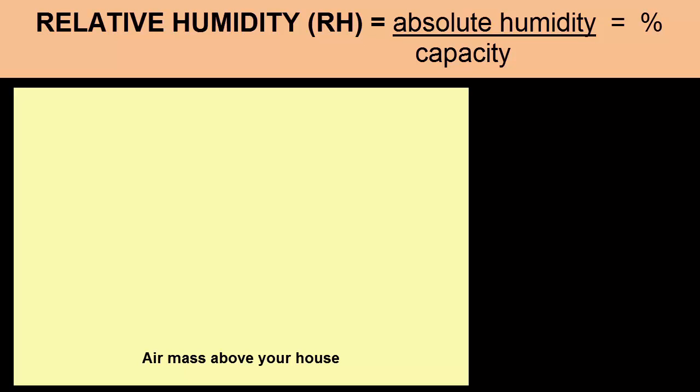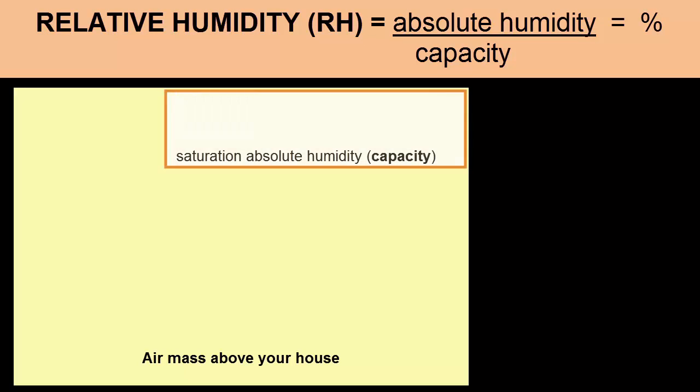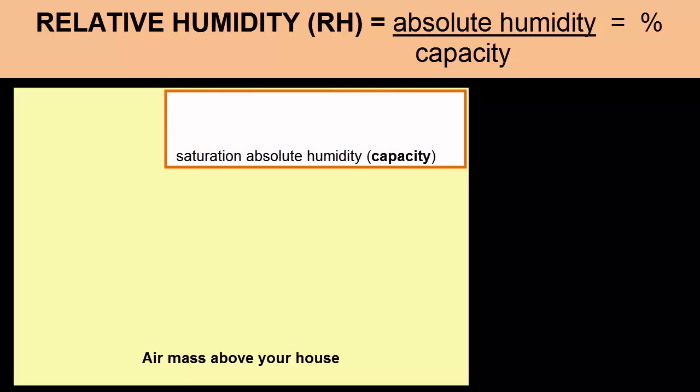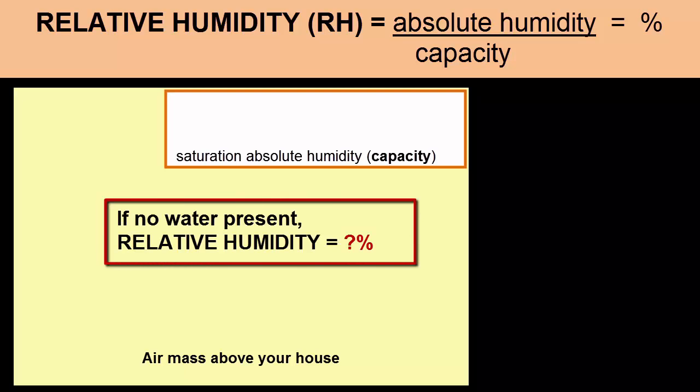Imagine that the yellow box in this picture represents a particular air mass. The white box in the top right is an approximation of how much of this air volume can be taken up by water. Note that in reality the water would be present and disseminated throughout, not separated into this little box — separation is only for the purposes of this explanation. If there is no water present in this air mass, then what is the relative humidity of the air? Zero percent.